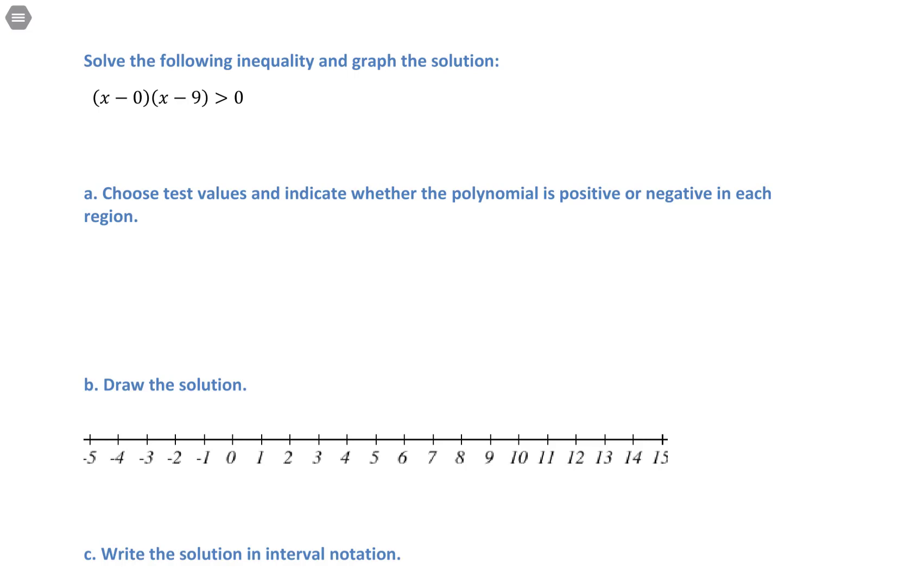What you have to do is find the zeros. Since this is already in factored form, that's pretty easy. It'll be zero itself and positive nine. We need to put those values on a number line in order, so zero and nine go in order there.